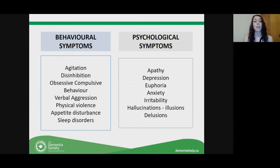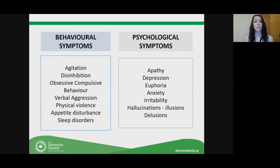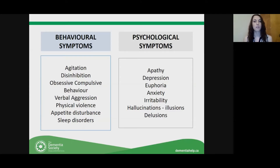The underlying psychological causes can look like apathy — a lack of mood — or depression, which is low mood. Euphoria, which is elation or very high mood, can occur. Anxiety can occur. Irritability. Hallucinations — people can really see or hear things that aren't there — or delusions, where they're stuck on a belief they really think is true that does not match reality. These are some examples, and we'll talk about which ones occur in different types of dementia.